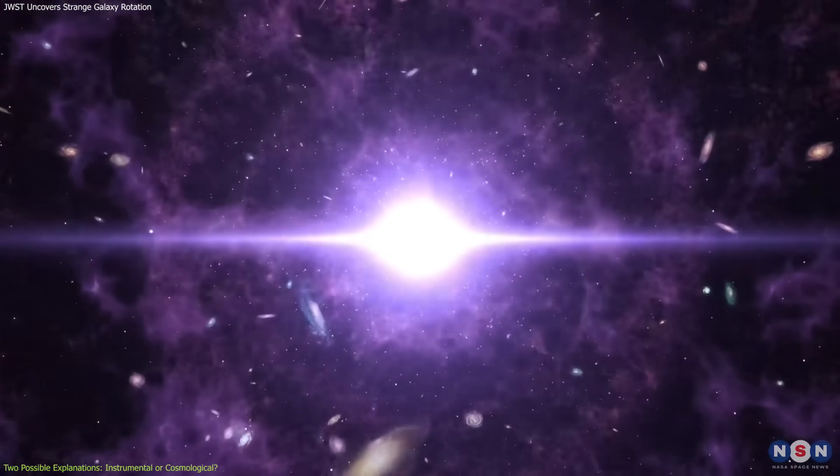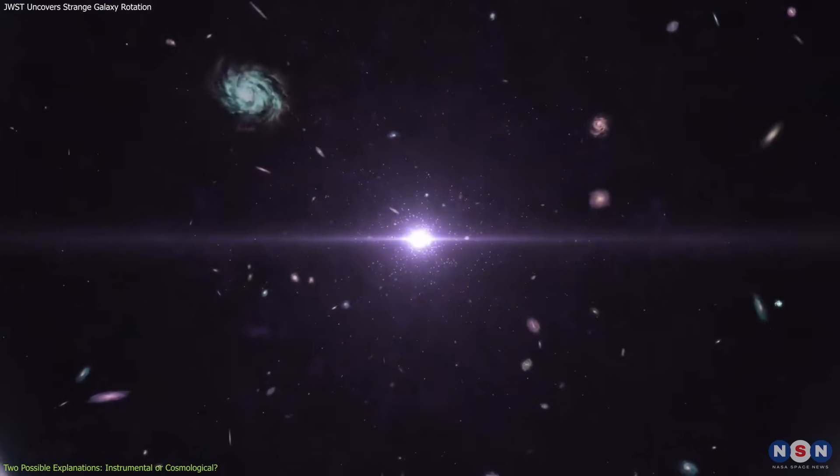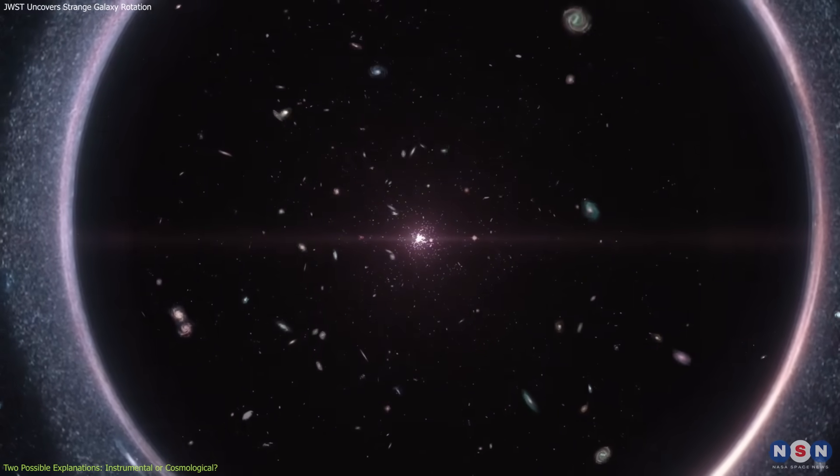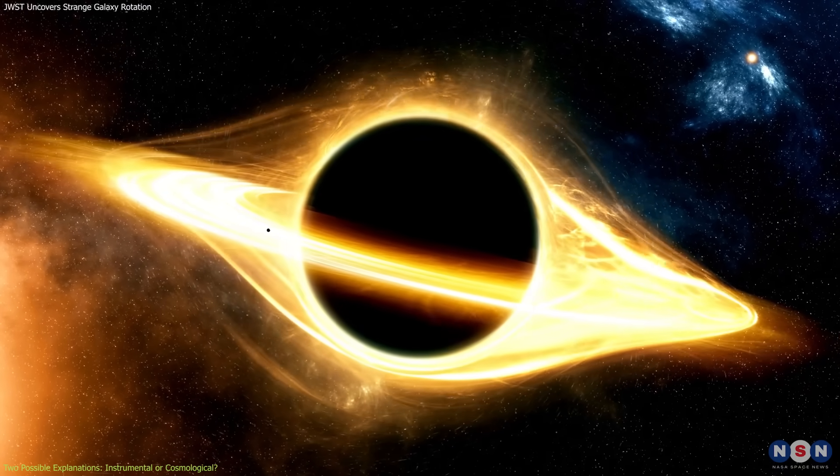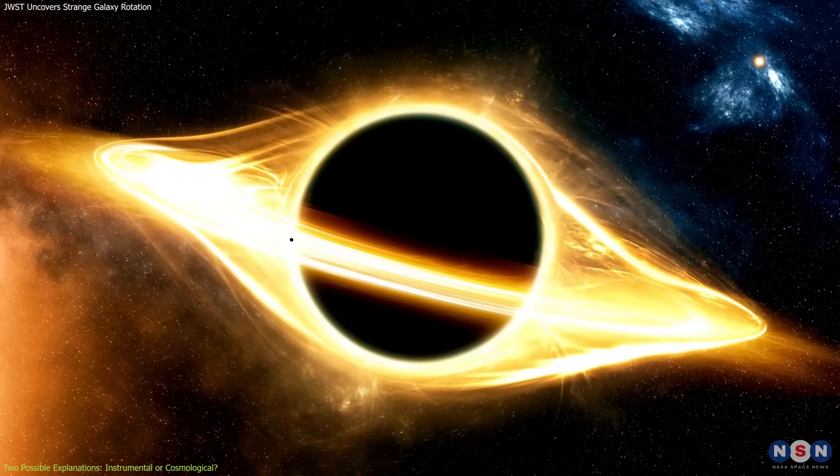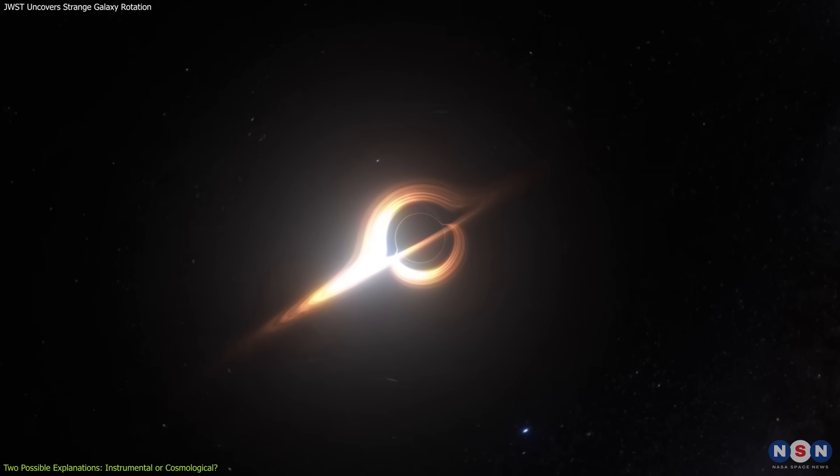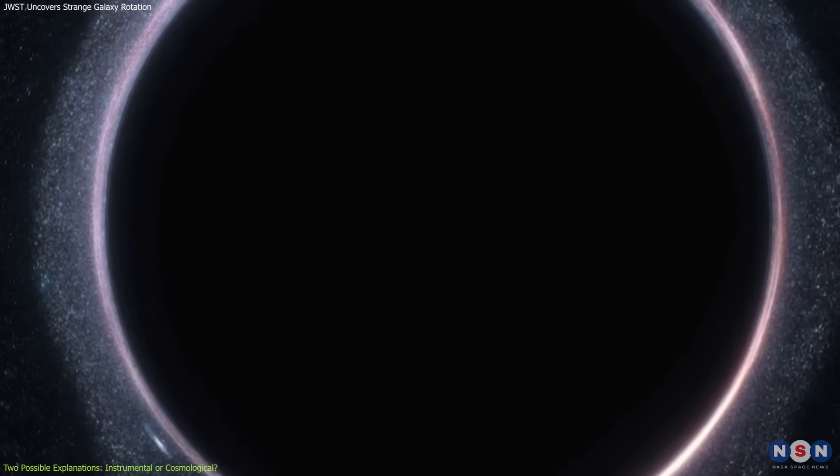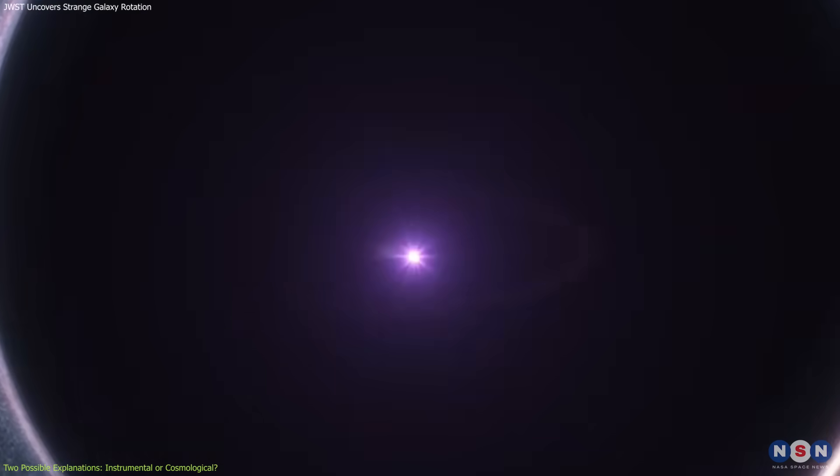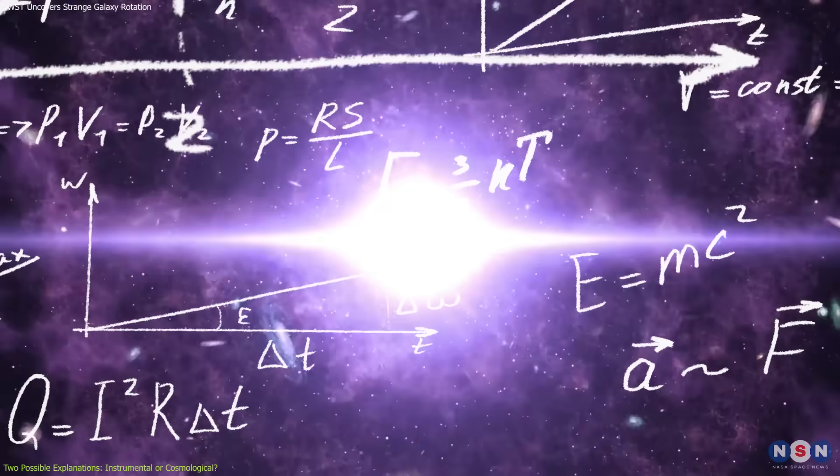This theoretical model suggests that our entire universe may have originated inside a rotating black hole. Under certain extensions of general relativity, black holes, especially those with angular momentum, could give rise to new, isolated regions of space-time. In effect, a black hole's interior could evolve into a baby universe that expands with its own physical laws and dimensions.